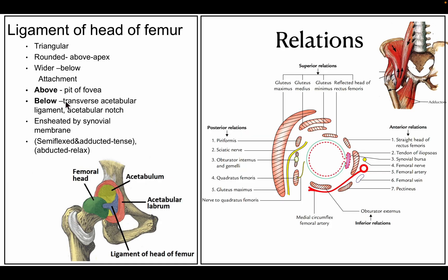The ligament of the head of the femur is triangular — round above (the apex) and wider below. Above it is attached to the fovea capitis (pit of the head of the femur), and below to the transverse acetabular ligament and the acetabular notch. It is covered by synovial membrane. It is tense in the semi-flexed and adducted position, and relaxed in the abducted position.